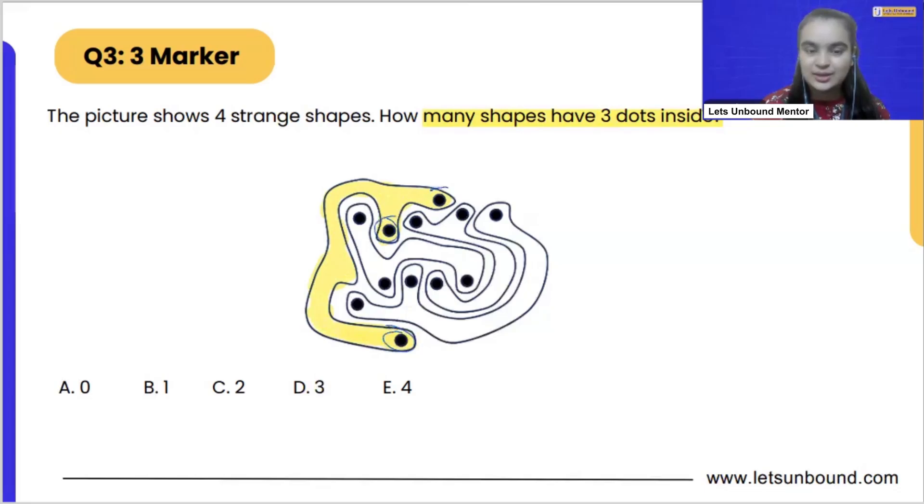So the shape number one is having how many dots? One, two, three. Right? So we got one shape which is having three dots. That means option number A is eliminated.